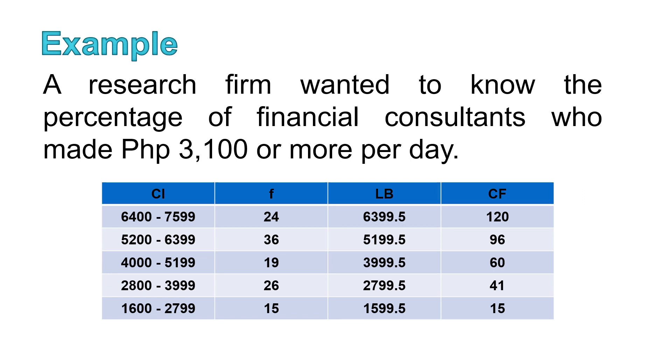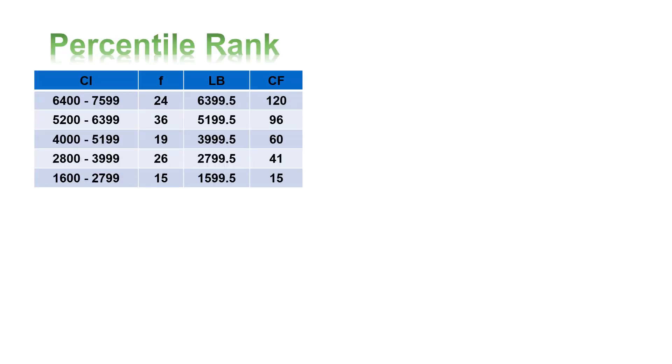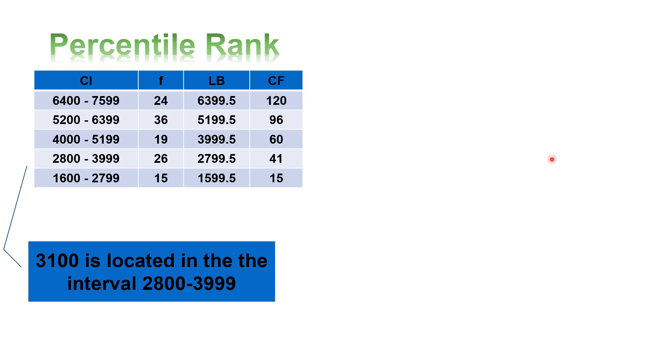Let's have example number 2. A research firm wanted to know the percentage of financial consultants who made 3,100 pesos or more per day. Find out where is the location of 3,100. So, 3,100 is located in the interval 2,800 to 3,999.